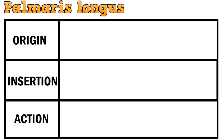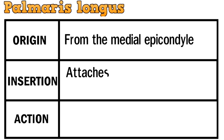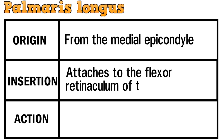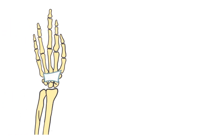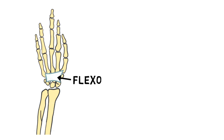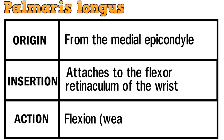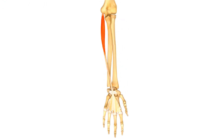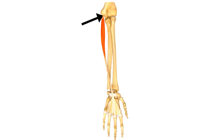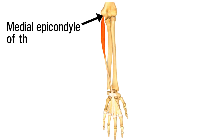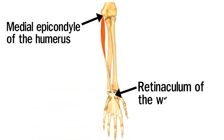Third muscle is palmaris longus. This muscle also originates from the medial epicondyle and attaches to the flexor retinaculum of the wrist. The flexor retinaculum is a fibrous connective tissue band that forms the anterior roof of the carpal tunnel. The action of the muscle is weak flexion at the wrist. Again, this is the medial epicondyle of the humerus, and this is the retinaculum of the wrist, the point of insertion. This muscle is palmaris longus.